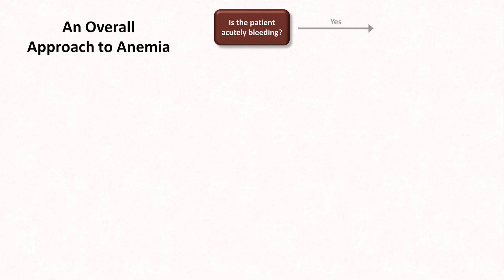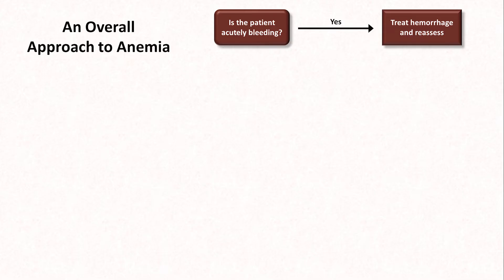The first question to consider is whether the patient is actively bleeding. This is usually obvious, but not always, particularly in the case of a retroperitoneal bleed. But if active hemorrhage is identified, treat it, obviously, and reassess, keeping in mind that it may take many weeks for the hematological system to fully recover from a major bleed.